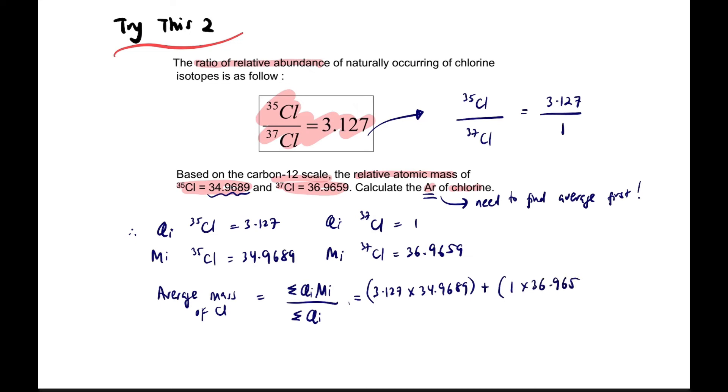So for chlorine, it's 3.127 times its mass plus 1 times its mass, divided by the total ratio abundance which is 3.127 plus 1. We've entered the values, now just calculate.